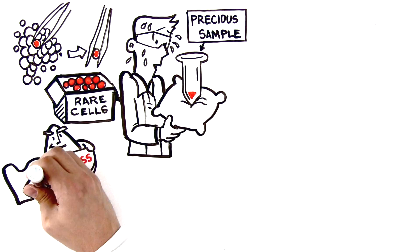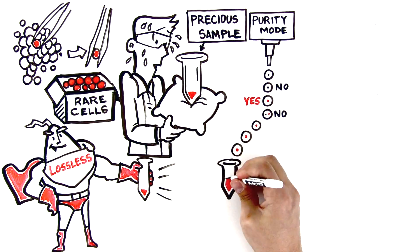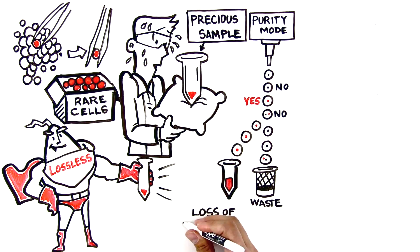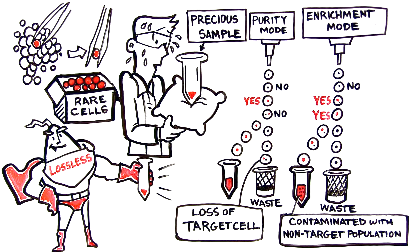That's when lossless cell sorting saves the day. Other benchtop cell sorters limit you to sorting either in purity mode, which can result in the loss of your precious target cells, or enrichment mode, which can lead to a less-than-pure sample.